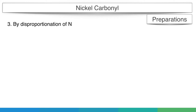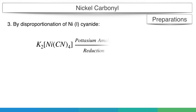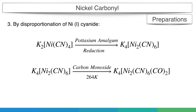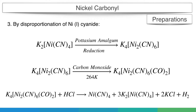Preparation method 3: By disproportionation of nickel(I) cyanide. Potassium tetracyanonickelate is first reduced by potassium amalgam to a nickel(I) complex. This is treated with carbon monoxide at 264 degrees Kelvin to form potassium hexacyanodicarbonyl nickelate, which disproportionates with water or acid to form nickel tetracarbonyl.